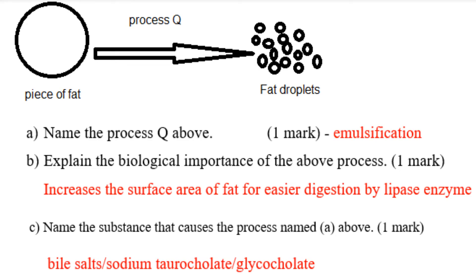Next question: you have a piece of fat, and that fat is broken down into smaller pieces. You are told to name the process. The process is emulsification — the breaking down of fat into small droplets.